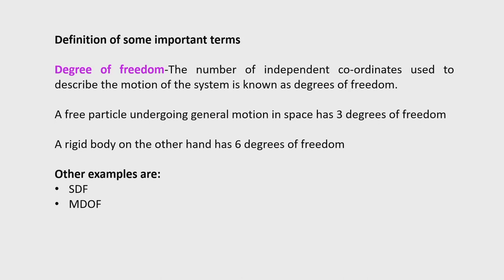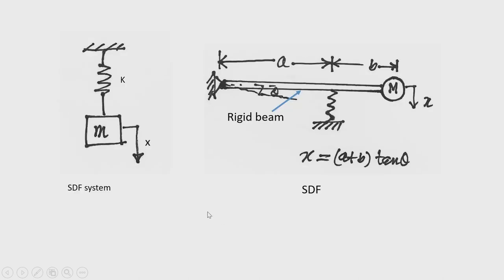Degrees of freedom are known as single degree of freedom and multi-degree of freedom. In a dynamic system, we model the system as a single degree of freedom or multi-degree of freedom system, which converts the continuous system into an equivalent discrete system. For example, a mass suspended by a spring undergoing motion in the vertical direction only is constrained to move vertically, and therefore it is a single degree of freedom system.